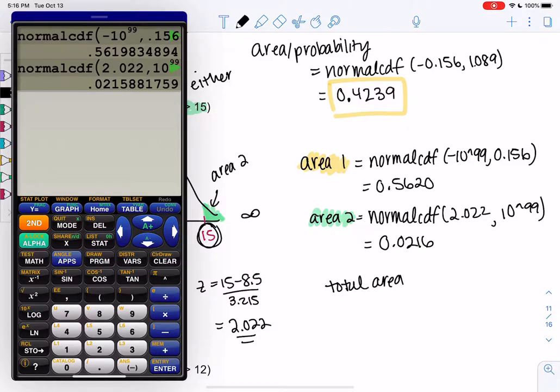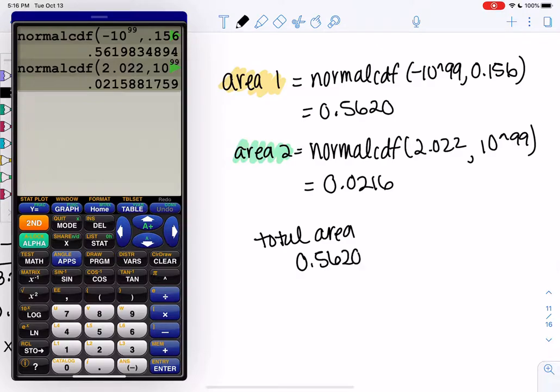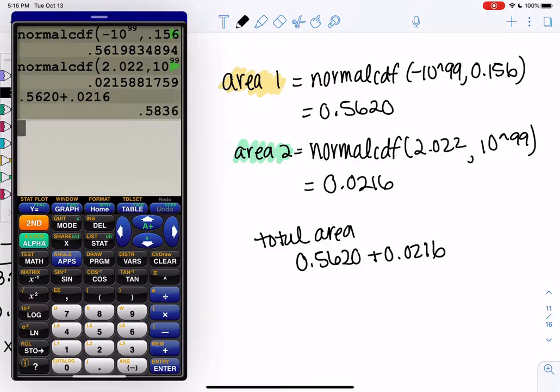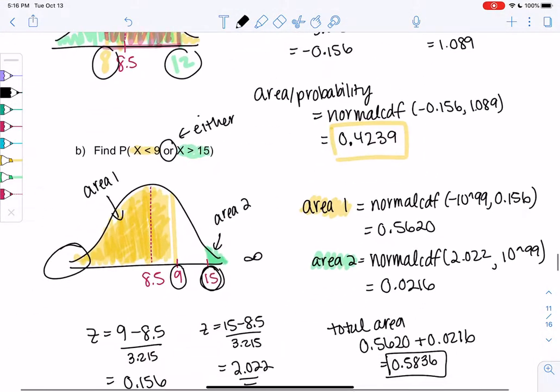Or means either or. So 0.5620 plus 0.0216, and we get about 0.5836 for the area. So just make sure you definitely draw the curve for the ands and the ors.